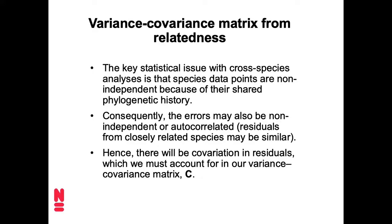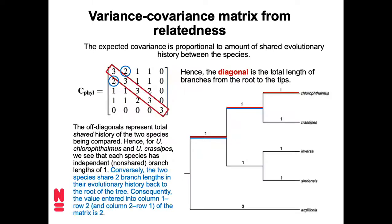Here now comes the trick for how we can use this variance-covariance matrix — also called a covariance matrix, a VarCov matrix; they all refer to the same thing. Because there is shared evolutionary history, species have been evolving trait values for a while as members of the same lineage within their ancestors, so they're going to co-vary. We have to do something with this, and here's how we might deal with that covariation.